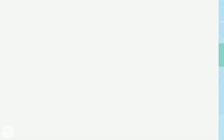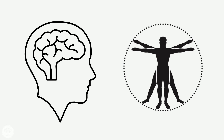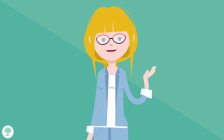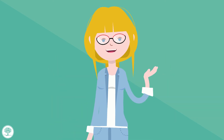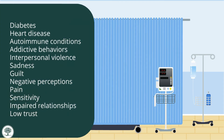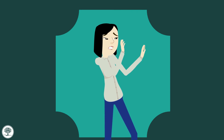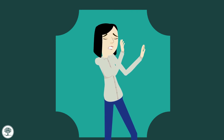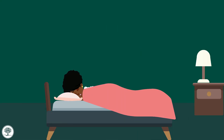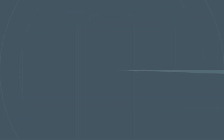The big takeaway here is that trauma elicits various reactions within the brain that affect the entire body. Exposure to trauma leads to a cascade of biological changes. Traumatic stress increases our chances for chronic diseases such as diabetes, heart disease, and autoimmune conditions, as well as increased risk for addictive behaviors, interpersonal violence, sadness, guilt, negative perceptions, pain sensitivity, and impaired relationships with low trust. All of these are in part because of the biological processes associated with the stress response.